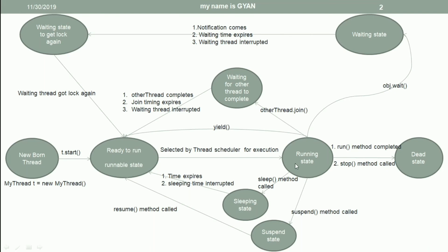From the running state, a thread can either go to the dead state or to the ready to run state. It does not matter whether the thread is calling the wait method, join method, sleep method, or suspend method — the thread always ends up in the ready to run state. From the ready to run state, it will again be scheduled by the thread scheduler.